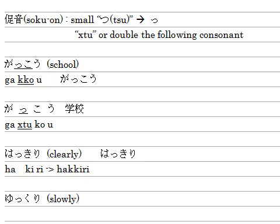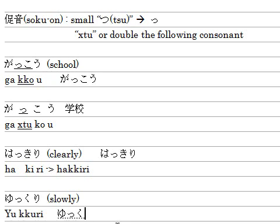Another example is ゆっくり, which means 'slowly.' So ゆ is Y-U, then double K: K-K-U, and R-I. You type Y-U-K-K-U-R-I. ゆっくり.